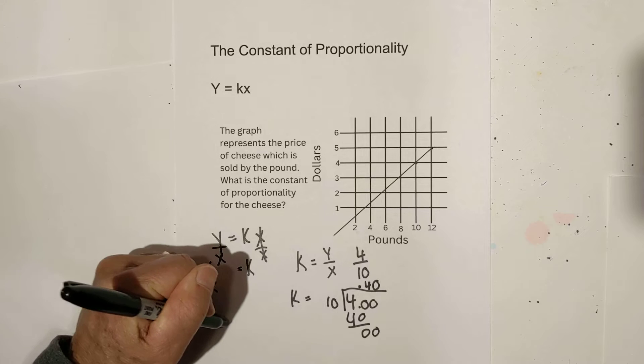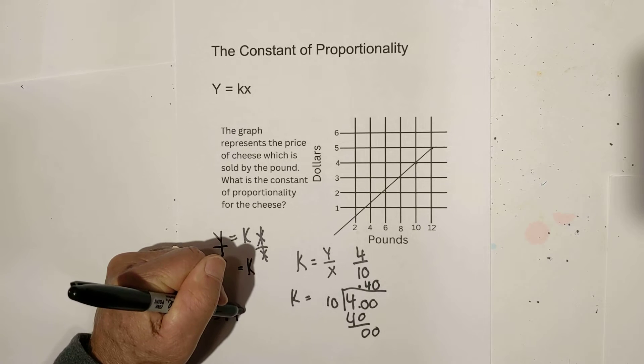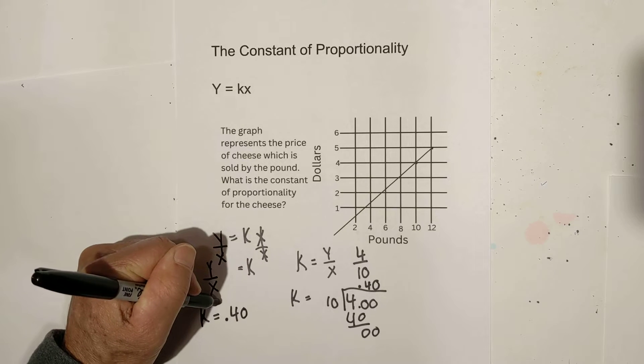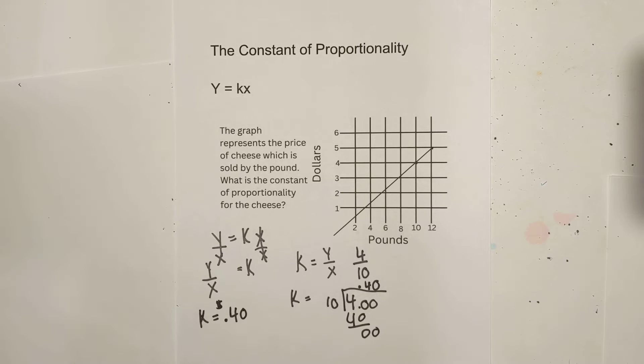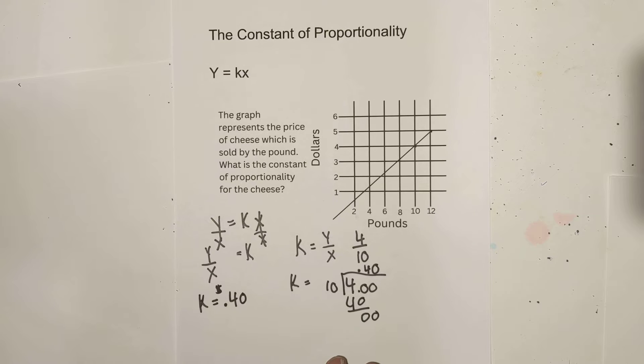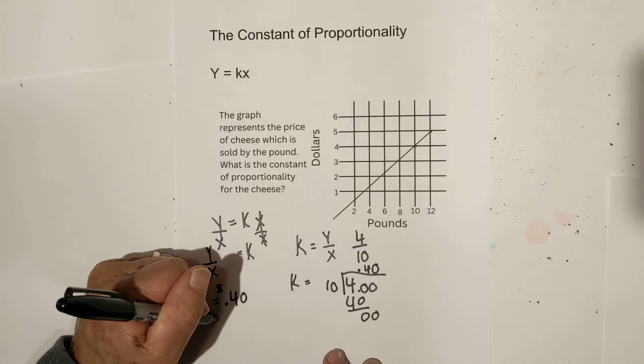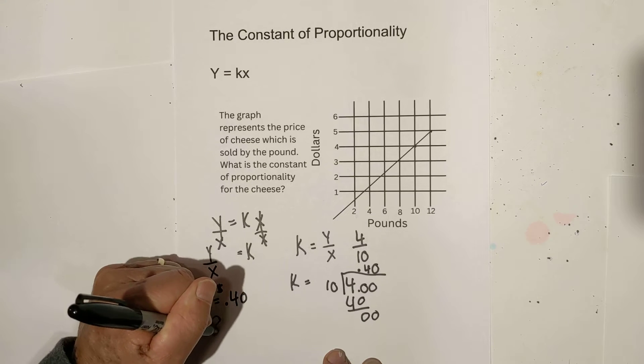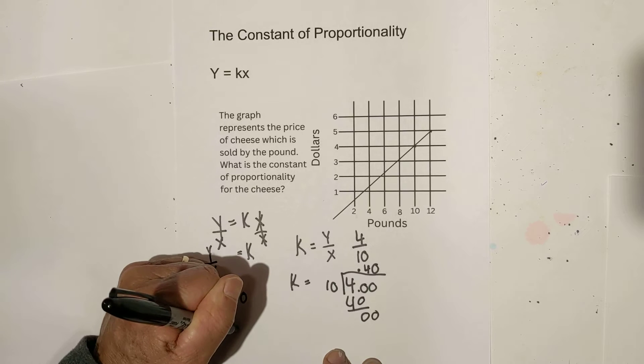k equals basically 40 cents. So, what does that tell us? Say we go into the market, and we're going to buy, we'll make it easy, we're going to buy 8 pounds of cheese.